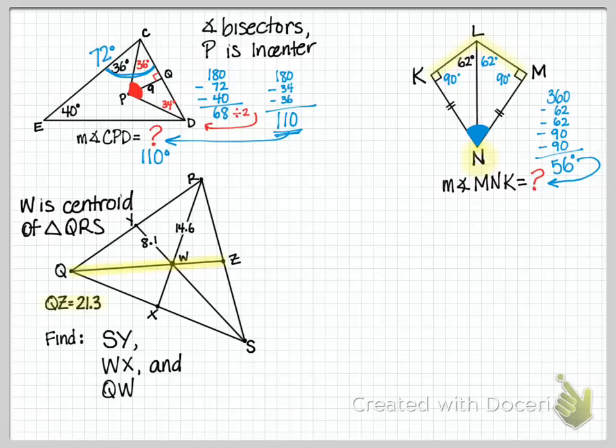And now the fourth one. You have that situation where we've got the triangle QRS, we have those three segments, and W is the centroid. That means each one of those segments in the triangle, QZ, RX, and SY, are medians. And since they're medians, we have the 2/3, 1/3 ratio, which means if YW is 8.1, then WS is twice that, 16.2. And if RW is 14.6, then WX is half of that.